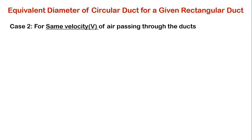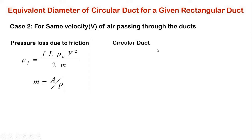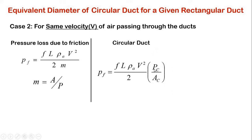Now let us consider the second case, where we calculate the equivalent diameter of circular duct for a given rectangular duct for the same velocity of air passing through both ducts. We use the pressure loss due to friction equation, and replace the hydraulic mean depth M with cross-sectional area divided by wetted perimeter. For circular duct, substituting this gives the corresponding equation.